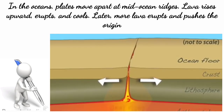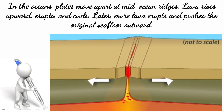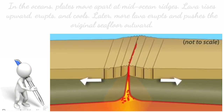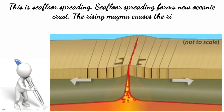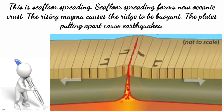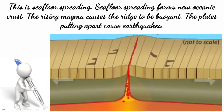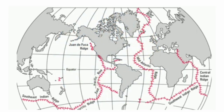Lava rises upward, erupts, and cools. Later, more lava erupts and pushes the original seafloor outward. This is seafloor spreading. Seafloor spreading forms new oceanic crust. The rising magma causes the ridge to be buoyant, and the plates pulling apart cause earthquakes. One common example of a mid-ocean ridge is the Mid-Atlantic Ridge, which stretches around the world.